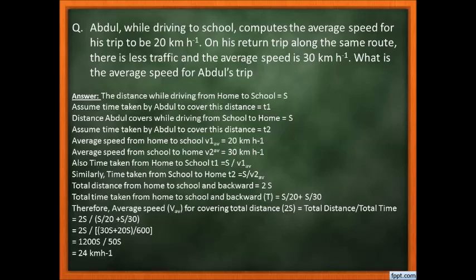The distance is S in both directions. The average speed from home to school is V1 = 20 km/h, and from school to home, V2 = 30 km/h. Time T1 = S/V1 = S/20, and T2 = S/V2 = S/30. We use the formula: time = distance / speed.